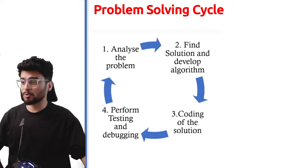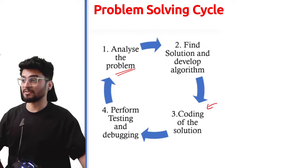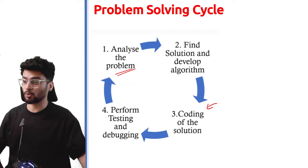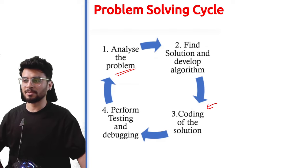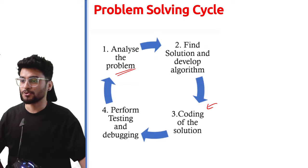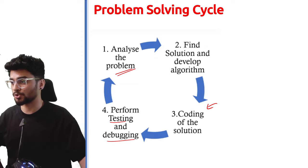You don't code directly. In problem solving, first you need to analyze the problem, plan out things, make a rough diagram, make a blueprint, and then write the code. You may not get correct code on your first try, so after writing the code, you test it. If your code is running but not giving the desired output, you perform testing and debugging — so it is an entire cycle of problem solving.